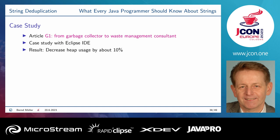There was a case study — if you download the slides, the magenta-colored text contains links. There was a case study with the Eclipse IDE reporting about a 10% decrease in heap usage. Heinz Karbutz reported a decrease in heap usage of about 25%.